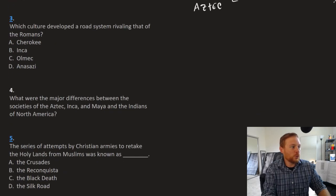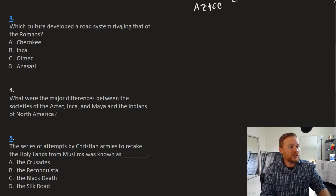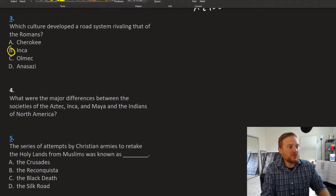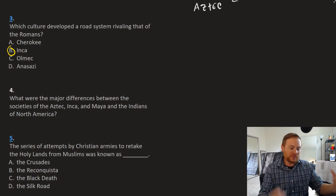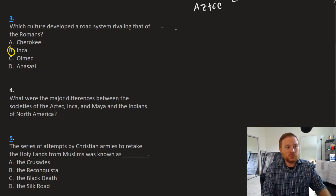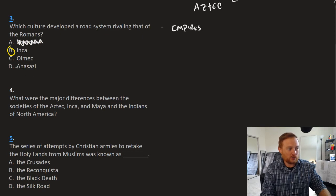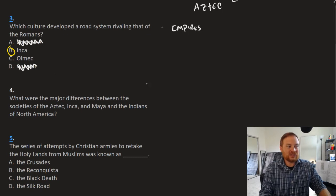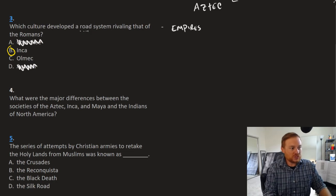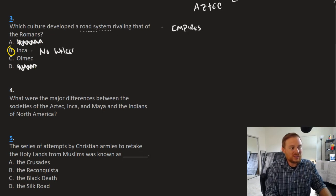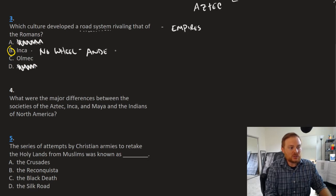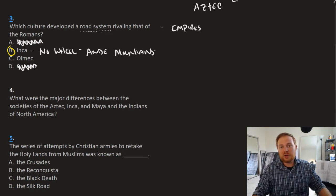Question number three, which culture developed a road system rivaling that of the Romans? The correct answer to that question is the Inca. When we talk about or when we think about really impressive monuments or the allocation of mass resources, that's really only possible through empires. And so as such, we could rule out perhaps local groups like the Cherokee. We could rule out local groups like the Anasazi, leaving us only with the Inca or the Olmec. Where the road system comes in is remembering that the Inca had no wheels and locations were located in the Andes mountains. And so the road system helped the Inca to administer their empire where they had a very mountainous terrain and really no wheeled vehicles to get around. And so these roads were not used for wheeled vehicles, but rather used for people to travel on them.